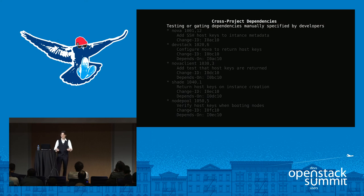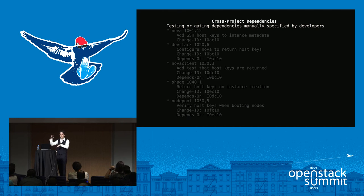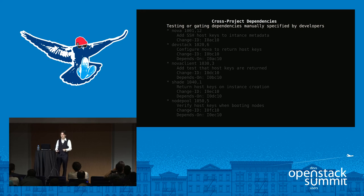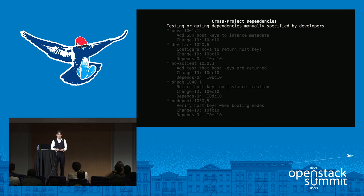So this was a series of changes enqueued in Zuul in an arbitrary order by the happenstance of when people approved certain changes. Zuul also gives us the ability to control this deliberately — we can actually create a series of changes and tell Zuul that they depend on each other, and Zuul will enqueue them in that order so they're all tested appropriately.